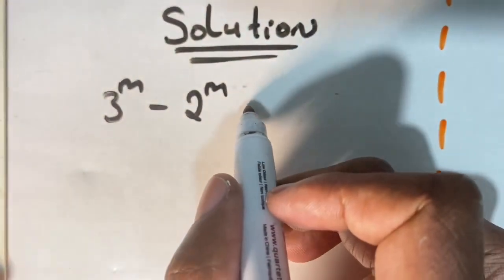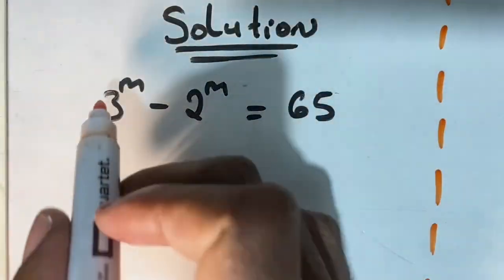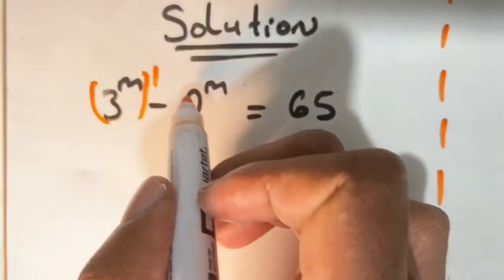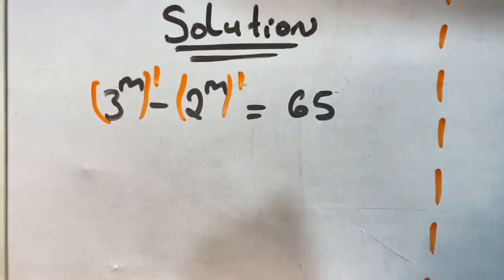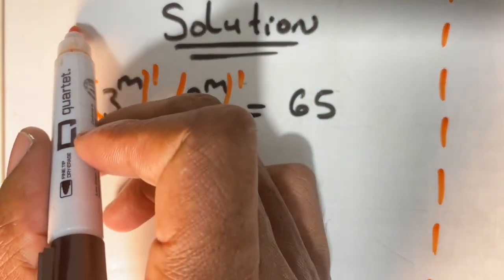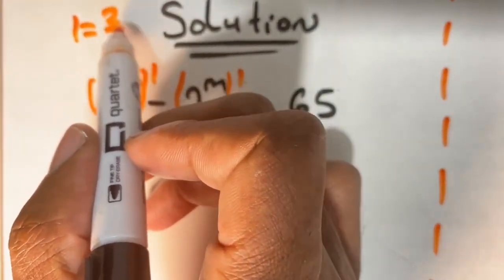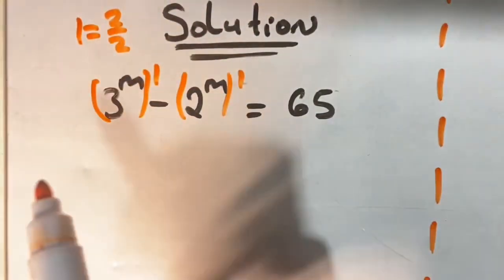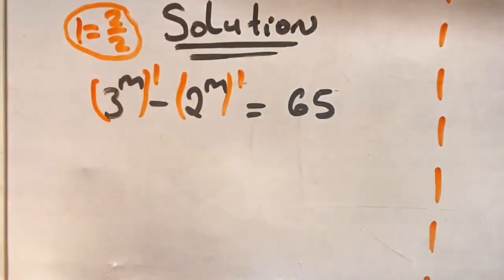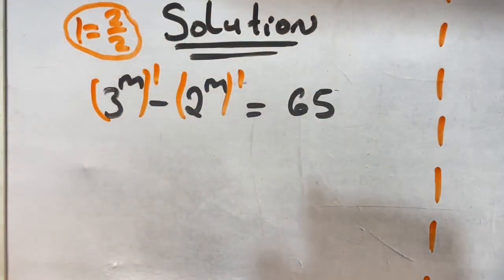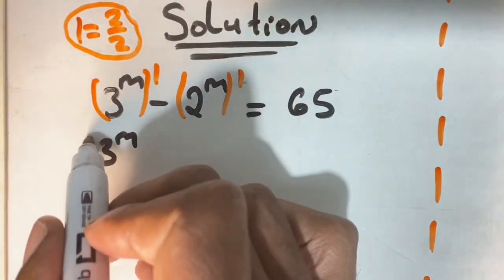We have 3 to the power of m minus 2 to the power of m is equal to 65, and we are given to solve m. To solve this equation we can write our expression as follows: 3 to the power of m in brackets and 2 to the power of m in brackets, each to the power of 1. We know 1 is the same as 2 over 2, and we are using the principle of equivalent fractions to solve this equation.